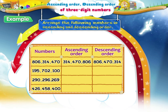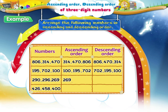For the second set of numbers, the ascending order is 100, 195 and 702. And the descending order is 702, 195 and 100. For the third set of numbers, the ascending order is 269, 290 and 296.